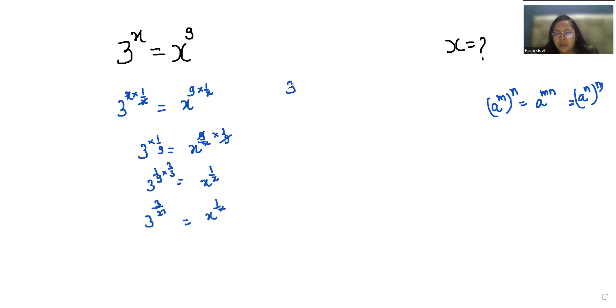So we can write 3 power 3 times 1 by 27 equals x power 1 by x, and 3 cube is 27 power 1 by 27, which gives us x equals 3 to the 7.